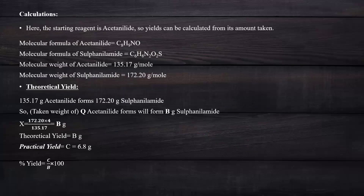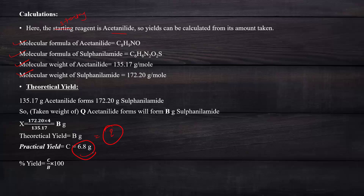In the calculation section, the starting material is acetanilide with molecular weight 135.17 g/mol, and sulfanilamide has a molecular weight of 172.20 g/mol. The theoretical yield is calculated from these values, and the practical yield will be approximately 6.8 grams, from which the percentage yield is determined.